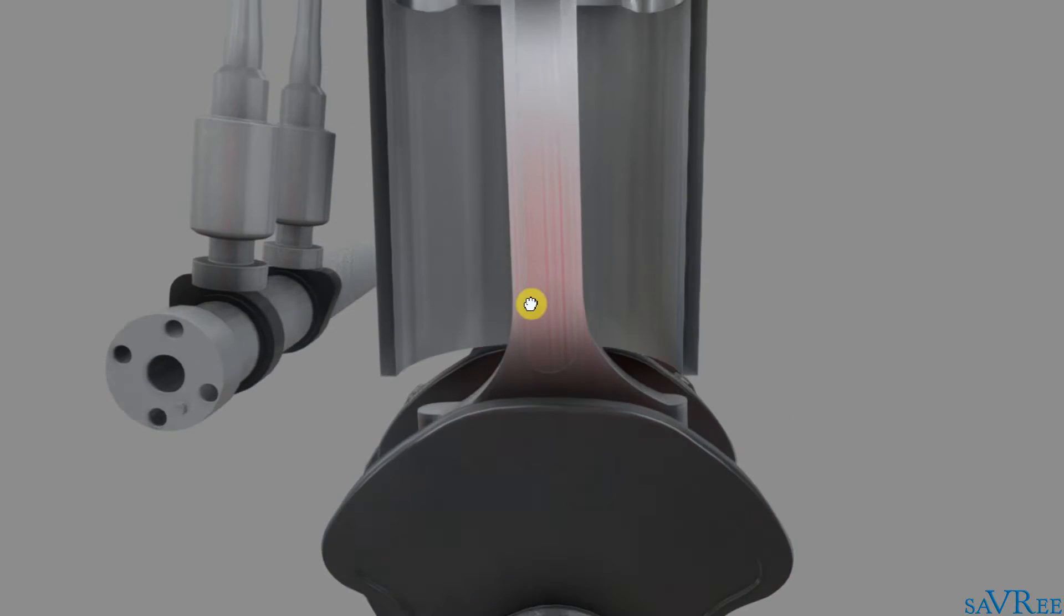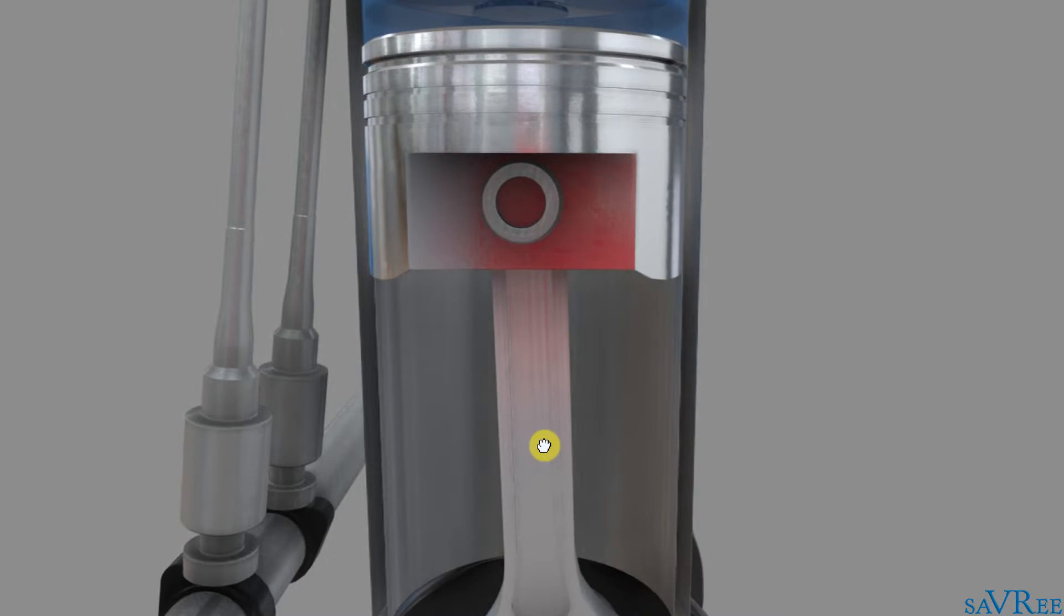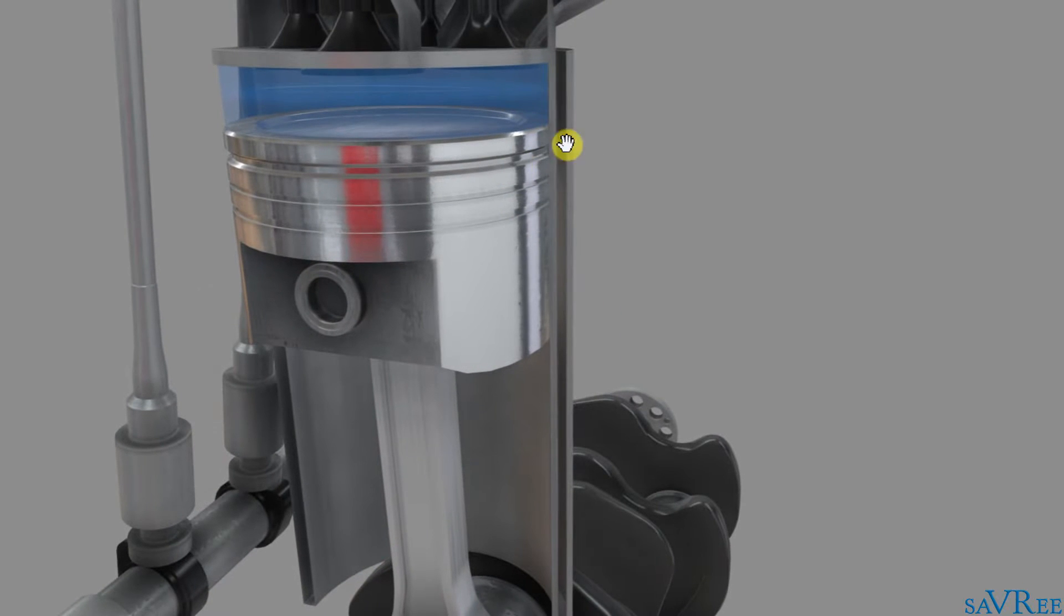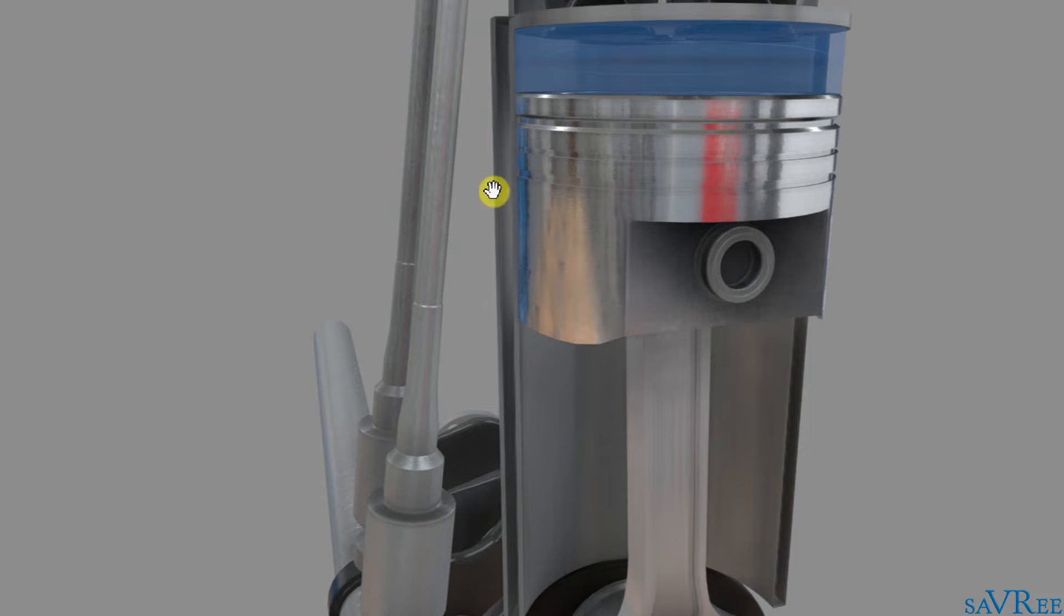The piston itself travels linearly up and down within the combustion space. That is this cylinder. You can see on the edge here, that is one side of the combustion space. And here is the other side of the combustion space.